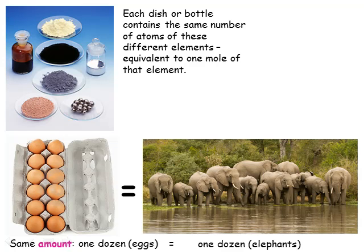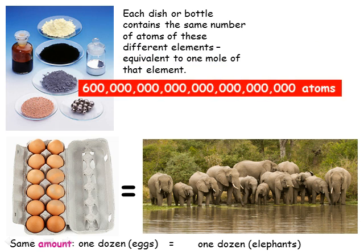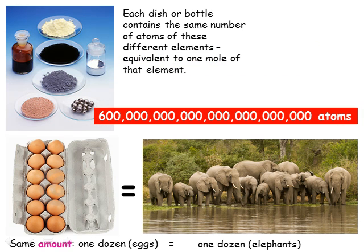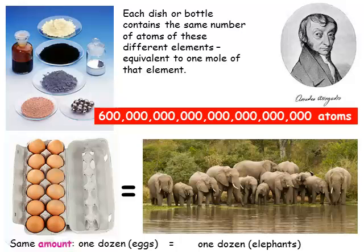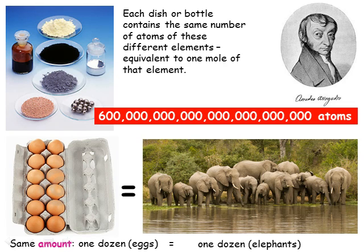Atoms are very, very small, and so the number of atoms in a mole is very, very large — 6×10²³, or 6 followed by 23 zeros. It's an almost unimaginably large number, far more than the number of galaxies in the observable universe, and that's just in a mouthful of water. This number is called Avogadro's number, after Amadeus Avogadro, whose work in the early 1800s led to the idea that a mole of any substance contained the same number of particles of that substance.